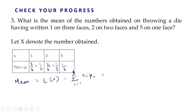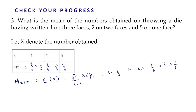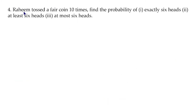So E(X) = 1 × (1/2) + 2 × (1/3) + 5 × (1/6). Taking LCM as 6 and simplifying, the numerator is 12 and the LCM is 6, so this equals 2. Therefore the mean is equal to 2.